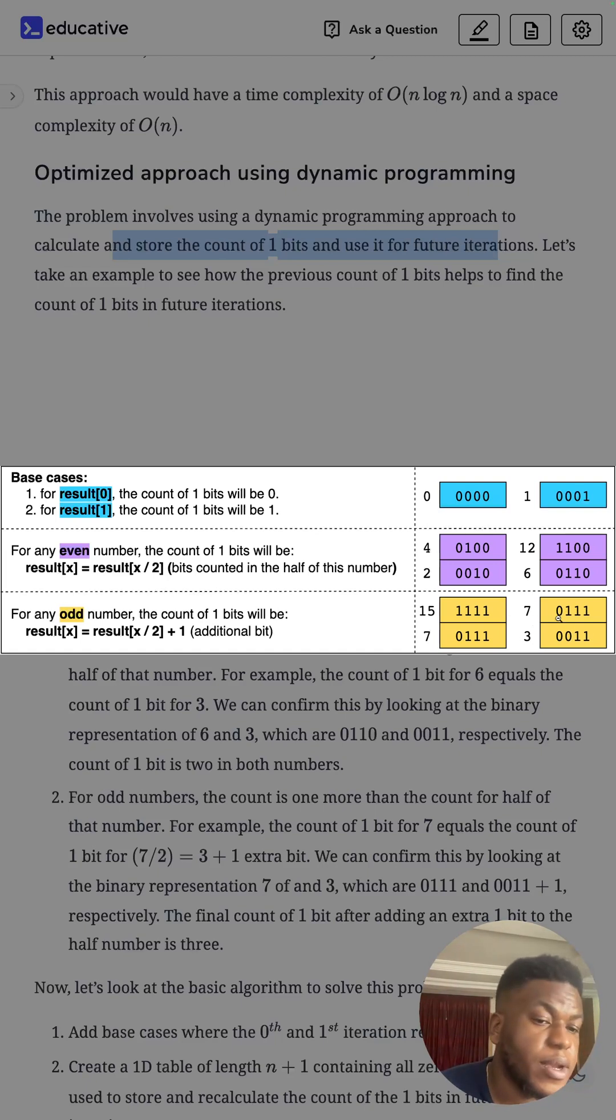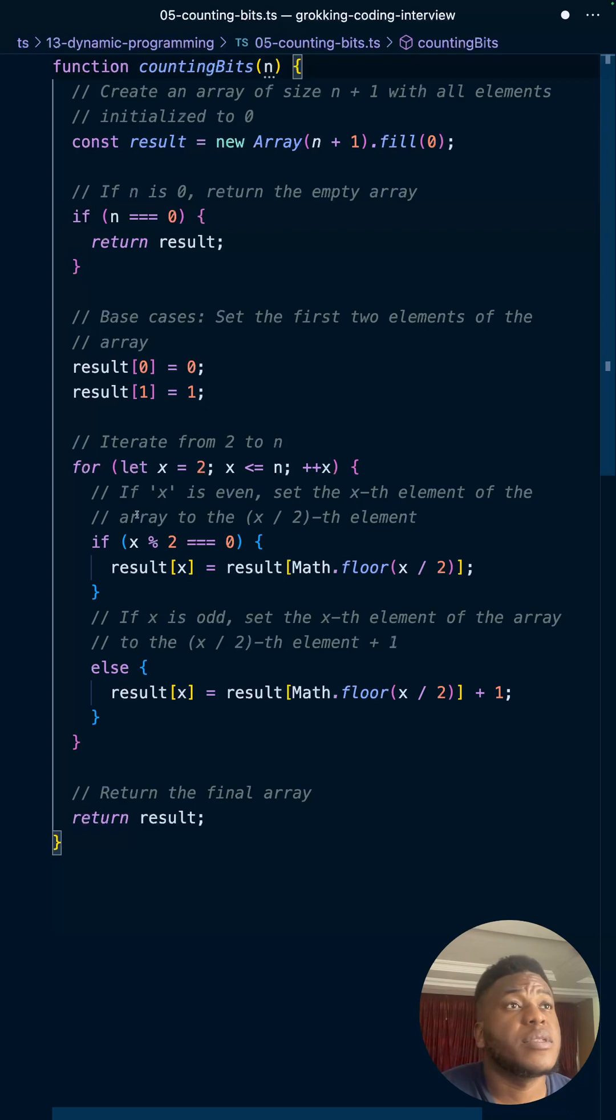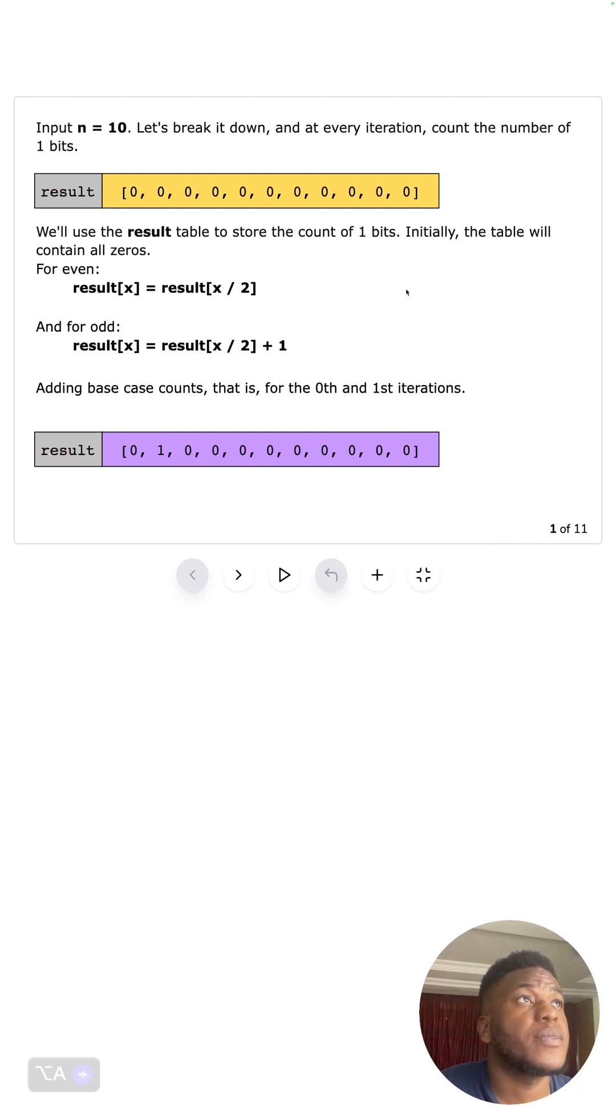For an input of 10, we initialize everything to zeros. When you look at the code, this is all that it takes. It's commented out so it makes it longer. We create an array, fill everything with zeros as you can see here, and then we remember what we said about even and odd numbers.